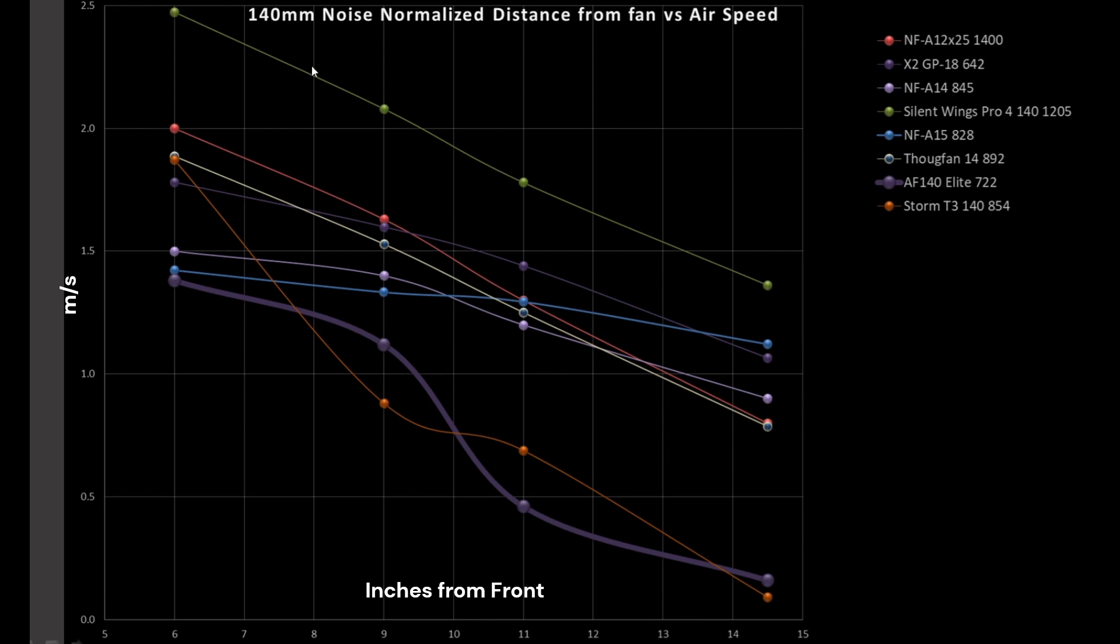Anyways, next we want to compare the fan against every other fan, or at least a majority of fans that indicate different trends. And that's what we have here. So the Silent Wings 4-140 was my top performer in the 140-millimeter class category. I have the A12X25 listed right here in red, and it is a good performer in the 120-millimeter class category. The NF-A14 is in here as well as a light purple line. So how does the AF140 Elite do? Well, it starts off at the bottom of the pack, isn't quite the bottom of the pack but still not very good, drops way down to the bottom of the pack, and ends up at the bottom of the pack.